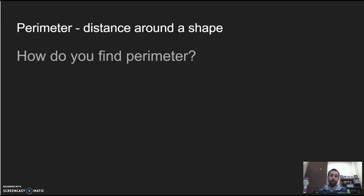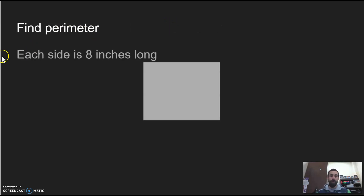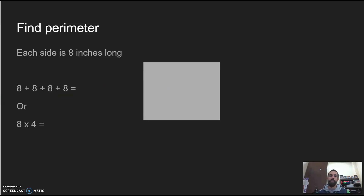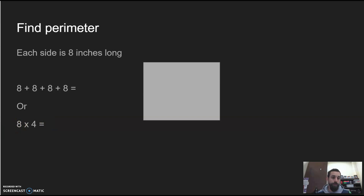We're going to talk about how to find the area and perimeter of every shape. First we'll start with perimeter. Do you remember how to find perimeter? If not, it's the distance all the way around a shape. If we have this square where every side is 8 inches long, the way to find perimeter is to add all sides — so 8 + 8 + 8 + 8, or 8 × 4 because there are four sides. Go ahead and do that right now. You should get 32 inches.